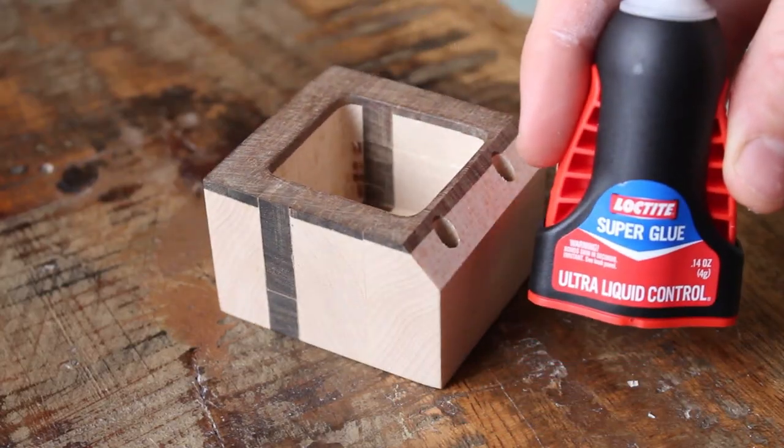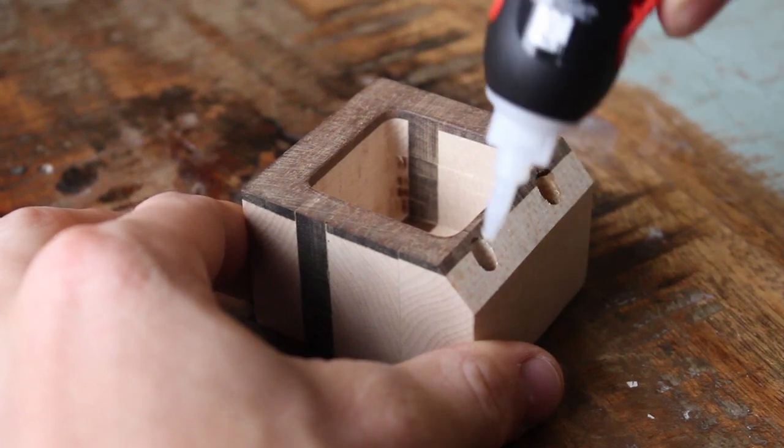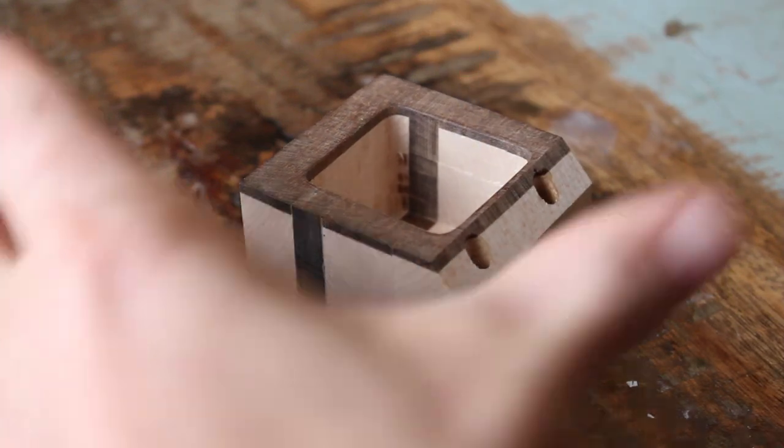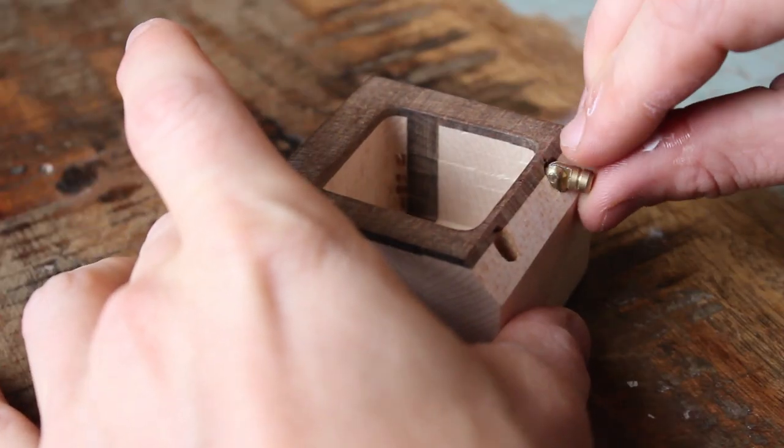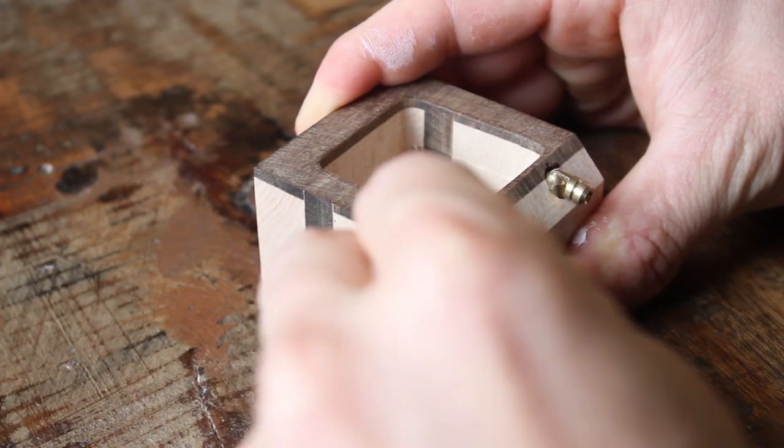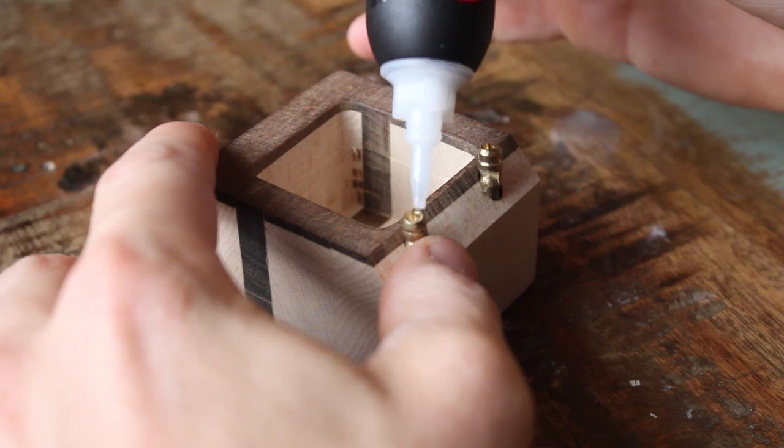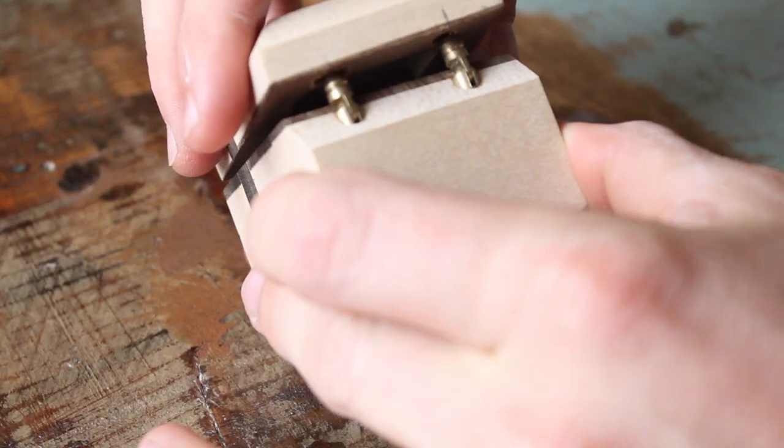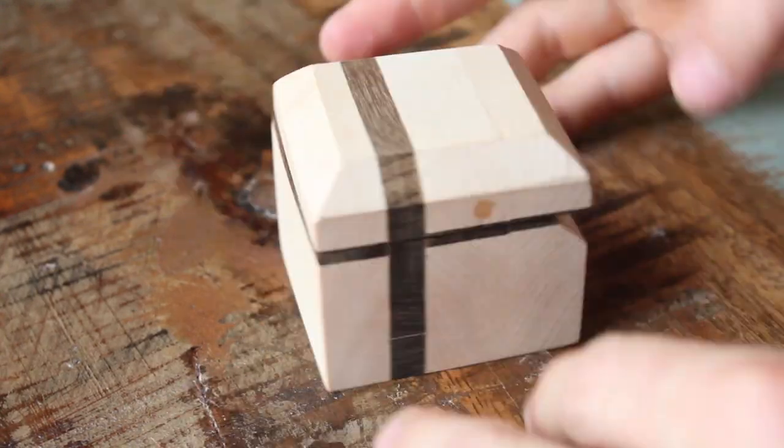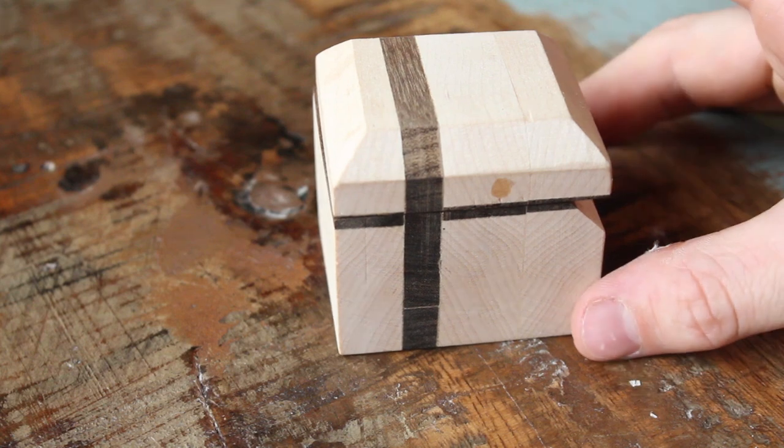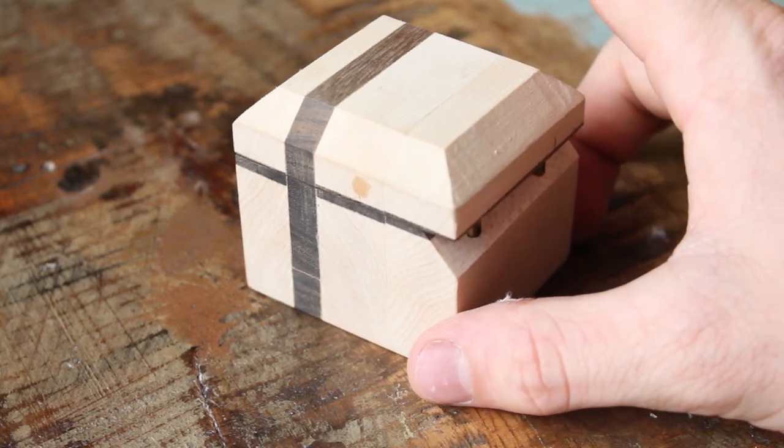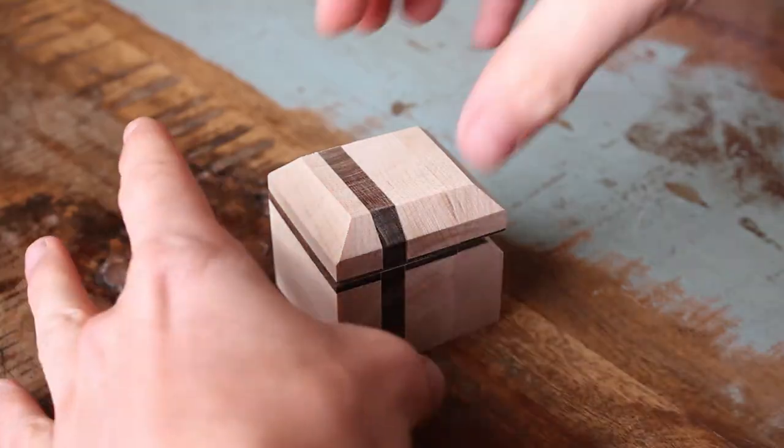Then I could assemble everything with a bit of super glue. Now this stuff dries really quickly, so make sure you have everything close by when doing so, and you don't need to use much either. For drying, let the box sit close so you know that when it does dry, it will close properly. Just don't glue the two halves together.